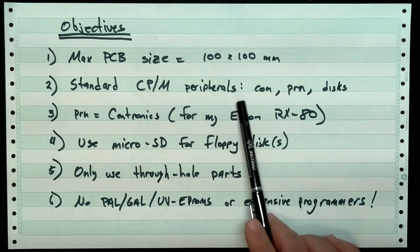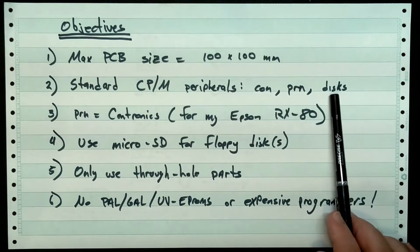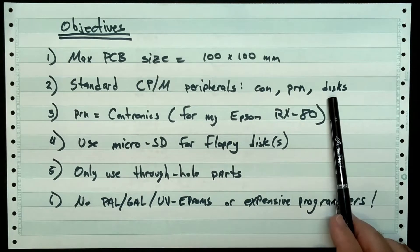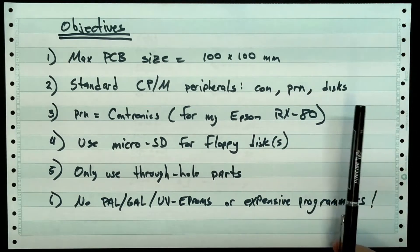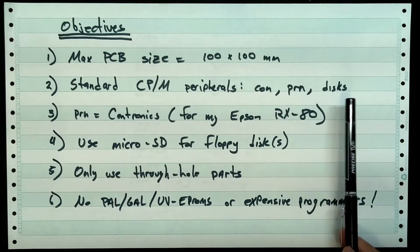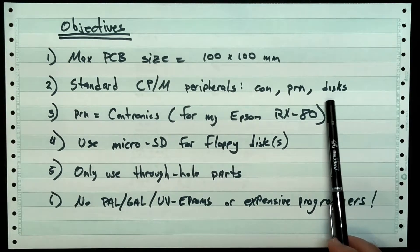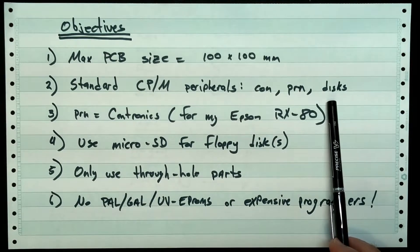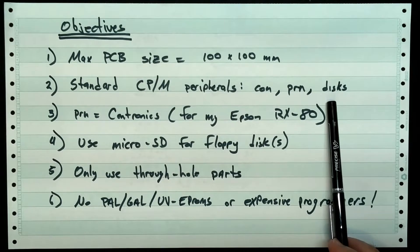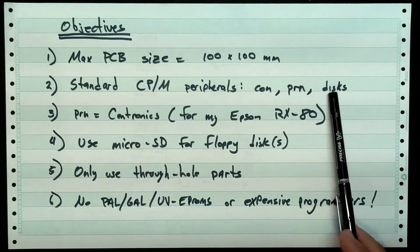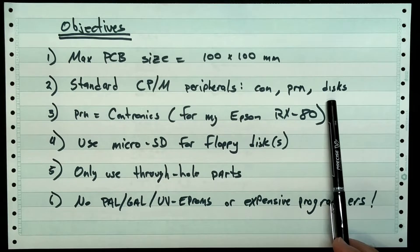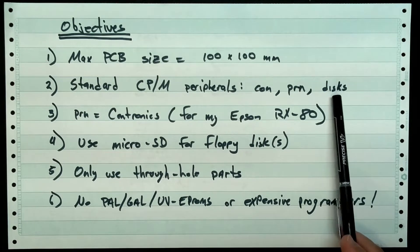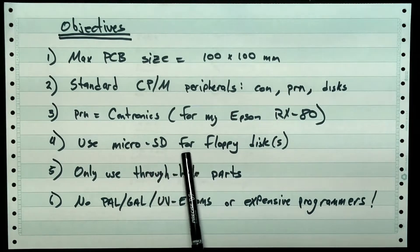I want to support the standard CPM peripherals: a console, a printer, and some preferably floppy disks. But in all honesty, I'm going to use a micro SD instead of a floppy disk because floppy disks are today a little expensive, especially if you want eight inch ones. And the other problem is most people don't have any floppy drives anymore on their PC or laptop. So creating the initial disk, getting it formatted, and getting the operating system image onto the floppy is probably cost prohibitive or impossible for some people.